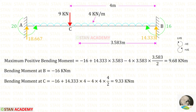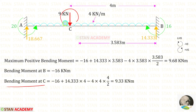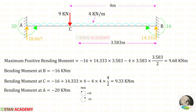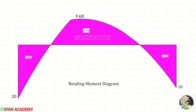Let us find the bending moment at point B: MB is acting clockwise, so it will be negative. In a similar way we can find the bending moment under the point load, which gives 9.33 kilonewton meter. To find the bending moment at point A using the right hand side rule — clockwise positive, anti-clockwise negative — MA acts anti-clockwise, so it will be negative. Using these values we can draw the bending moment diagram.